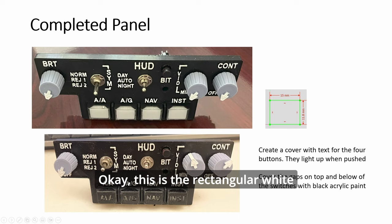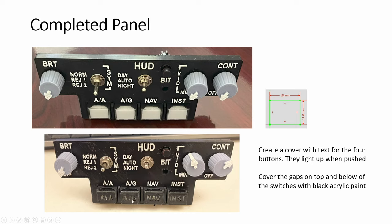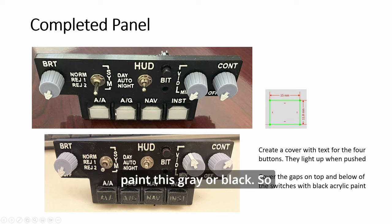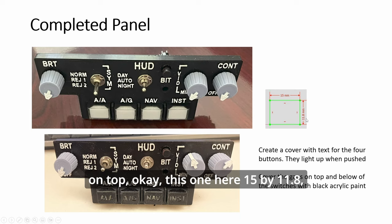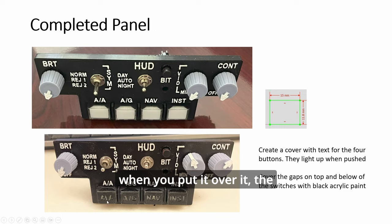This is the rectangular white indicator. And you print something black. And this time around, I use a cutout so that you can see the light. If the white letter is too white, too obvious, you want to dim it. You can slightly paint this gray or black so that when you put this cover on top. Okay? This one here, 15 by 11.8. When you put it over it, the white will not be so obvious.